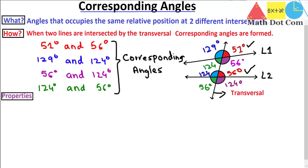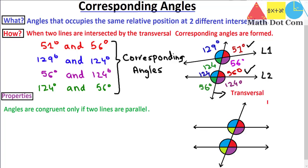Now we will discuss a few properties of corresponding angles. The first property is that angles are congruent only if the two lines are parallel. So corresponding angles will be equal or congruent if the two lines intersected by the transversal are parallel. Here we have two parallel lines L1 and L2 intersected by a transversal, forming corresponding angles. The red angle is 68 degrees and similarly this red one is also 68 degrees.